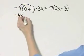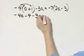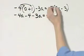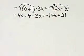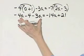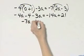That's negative 4a minus 4 minus 3a is equal to negative 14a plus 21. Do we have any like terms? The answer is yes. On this side, negative 4a minus 3a, that's negative 7a minus 4, is equal to negative 14a plus 21.